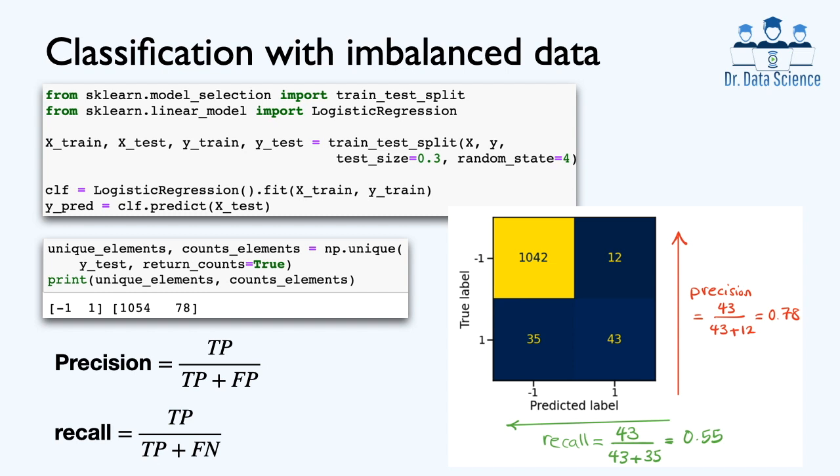We imported the thyroid dataset and the data matrix is called x. The target values plus 1 and negative 1 or positive and negative are given in a one-dimensional array called y. Using the train test split function from scikit-learn, we used 70% of the data for training and the remainder for testing. In the test dataset, we have 78 samples in the positive or minority class and there are 1054 samples in the negative or majority class.